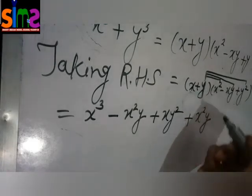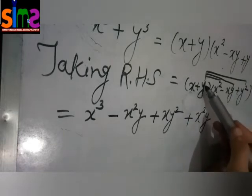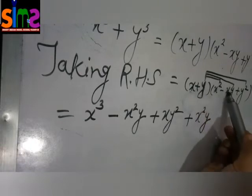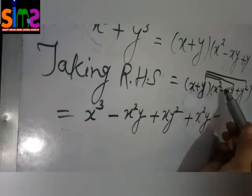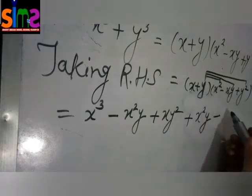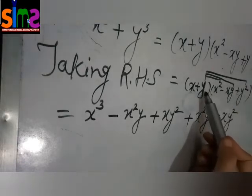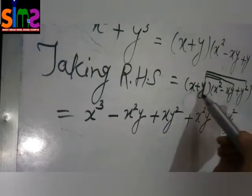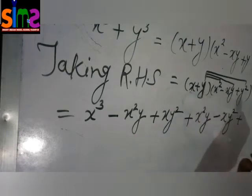We can write it as yx square also. But it looks nice. Now moving on next. We will multiply this y to this minus xy. As it is positive and it is negative. So plus minus equals minus. And the multiplication of y and xy will become xy square. Last we will multiply this y to this y square. It is positive, it is also positive. So plus plus equals plus. When we multiply this y to this y square we will get y cube.